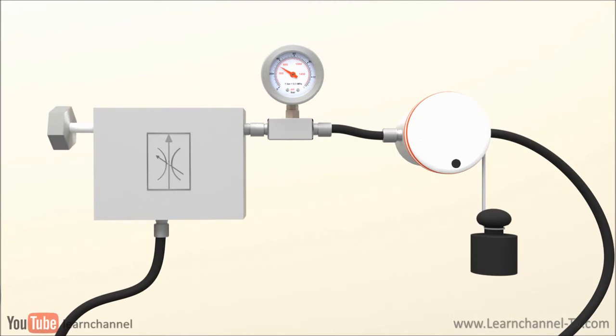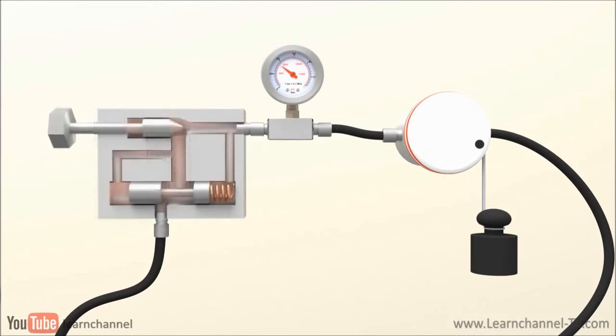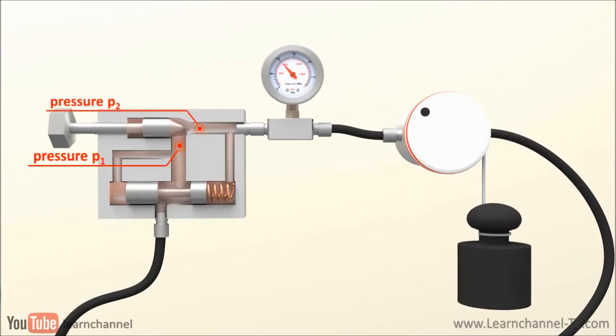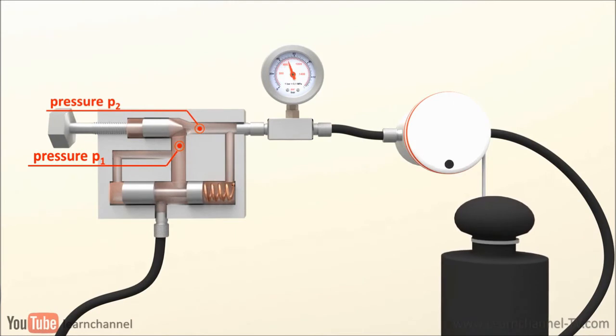But how so? Let's have a look what happens inside this special valve. We want to discuss the complex structure regarding the following two cases. First case, when the load becomes bigger, the pressure P2 increases. Now the spring-loaded compensator spool opens and the flow rate can be maintained.